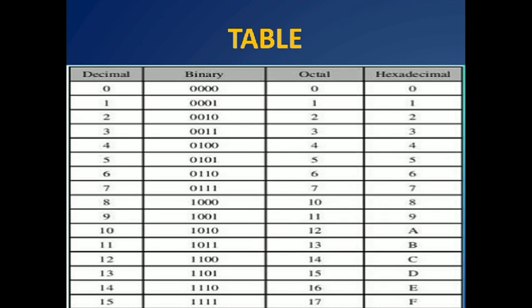The table continues: decimal 10 maps to binary 1010, decimal 11 to 1011, decimal 12 to 1100, decimal 13 to 1101, decimal 14 to 1110, and decimal 15 to 1111. In octal, because the base is 8, octal digits go 0 through 7 and then continue as 10, 11, 12, 13, 14, 15, 16, 17. In hexadecimal, digits 0 through 9 are used, followed by letters A, B, C, D, E, and F to represent values 10 through 15. You can analyze these numbers using the relationship between digit, base, and position.